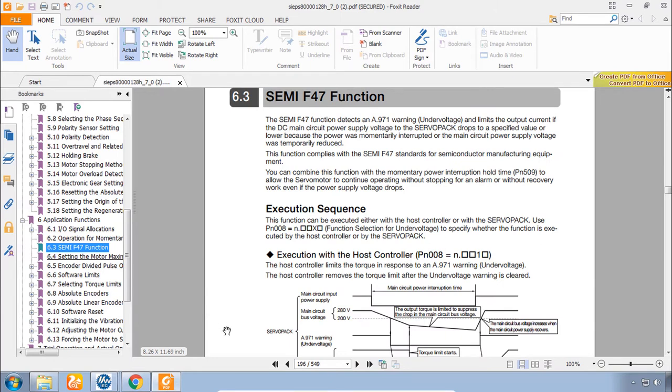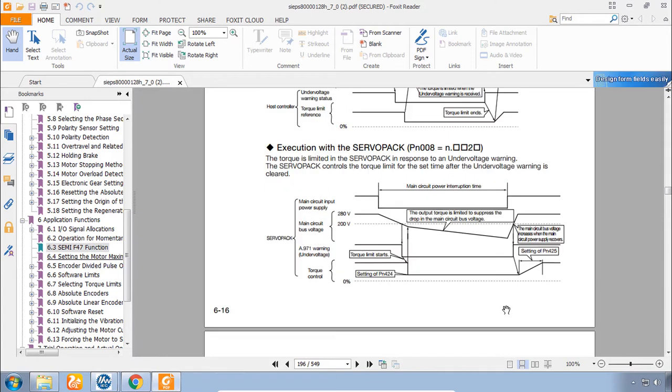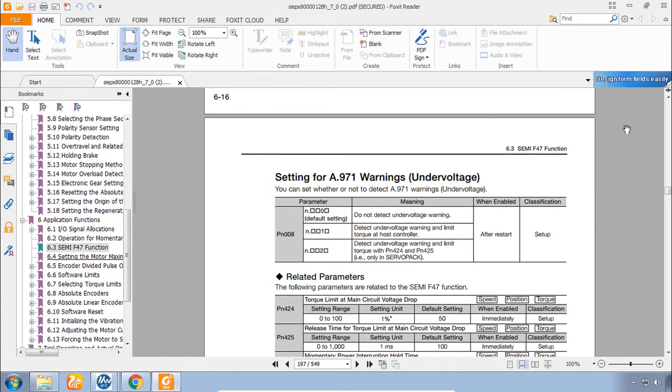Related to power outage is the Semi-F47. Semi-F47 is about power brownouts. Or voltage drop. You can get the amplifier to limit torque when there's an under voltage condition. Basically ways to keep the servo from turning off or throwing an alarm when there's a problem with the power input.